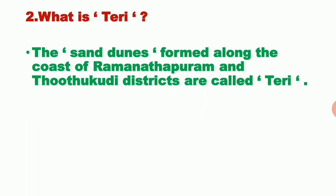Next question: What is Theri? The sand dunes formed along the coast of Ramnathapuram and Thutukudi districts are called Theri. These sand dunes are very unique in those coastal areas and they appear red in colour. It is called Theri.